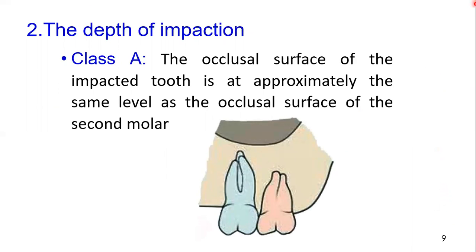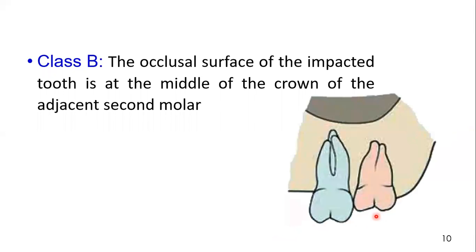The second factor of the classification is the depth of impaction. This is also similar to the Pell and Gregory depth classification as discussed with mandibular impacted teeth. Class A: the occlusal surface or highest point of the impacted maxillary third molar is approximately at the level of the occlusal surface of the second molar. Class B: the highest point is at the middle of the crown of the second molar, in between the cervical line and the occlusal surface of the second molar.